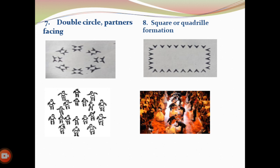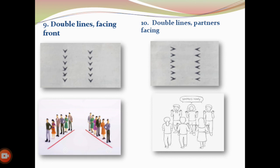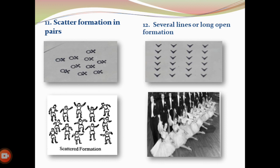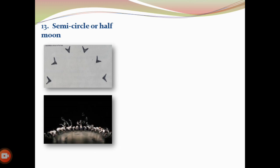Double Lines Facing Front: the line of movement thinking which may be forward, backward, or sideward. Double Lines Partners Facing: the line in which partners face each other. Scatter Formation in Pairs: dancers are separated and move quickly in different directions. Several Lines or Long Open Formation: expressing a well-disciplined body form in performing divine movements. Semi-Circle or Half Moon: members are arranged so that they form a half circle or half moon.